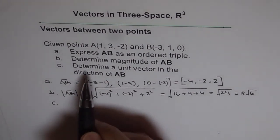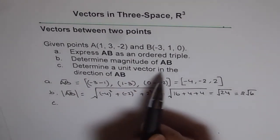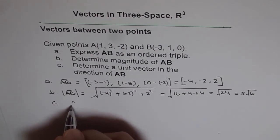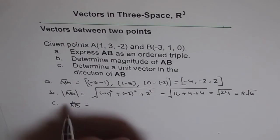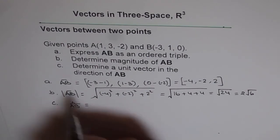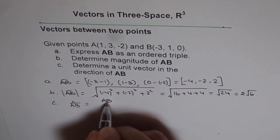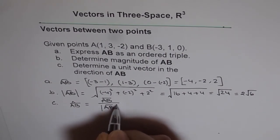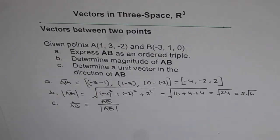Now part C is determine unit vector AB. So the unit vector in the direction of AB is actually equals to vector AB divided by the magnitude of vector AB. So that gives us the unit vector.